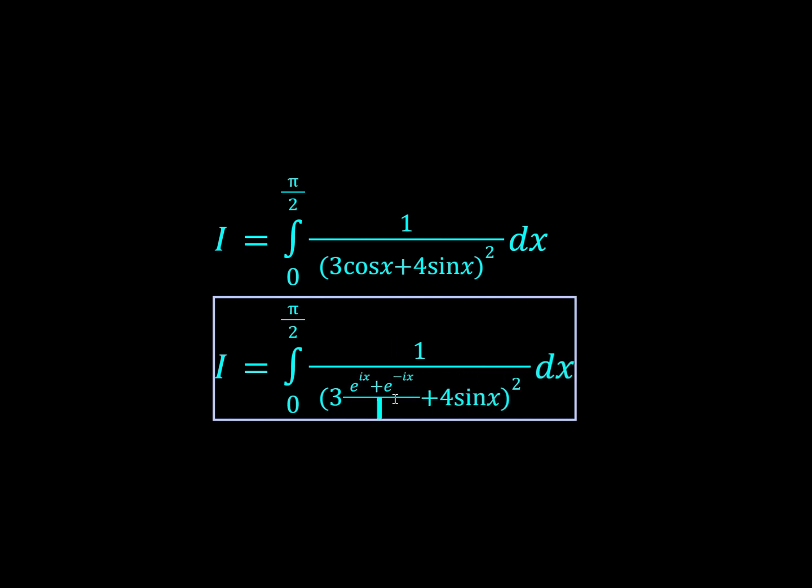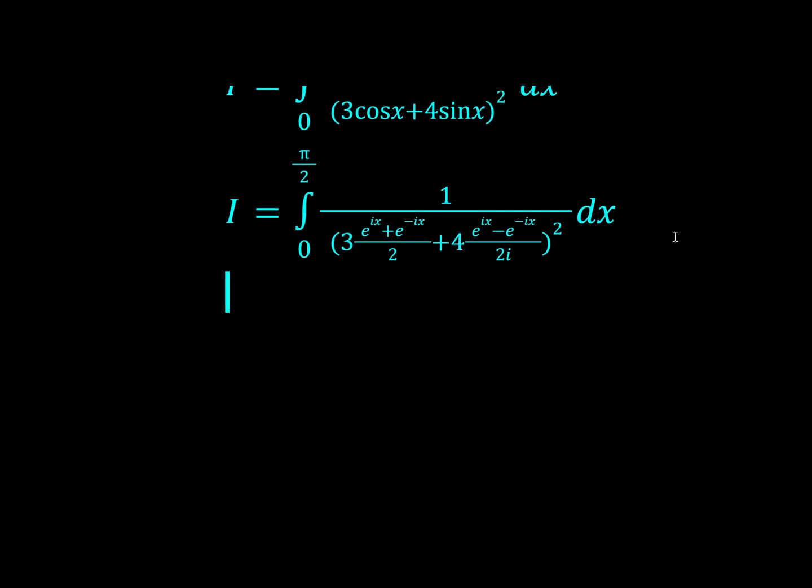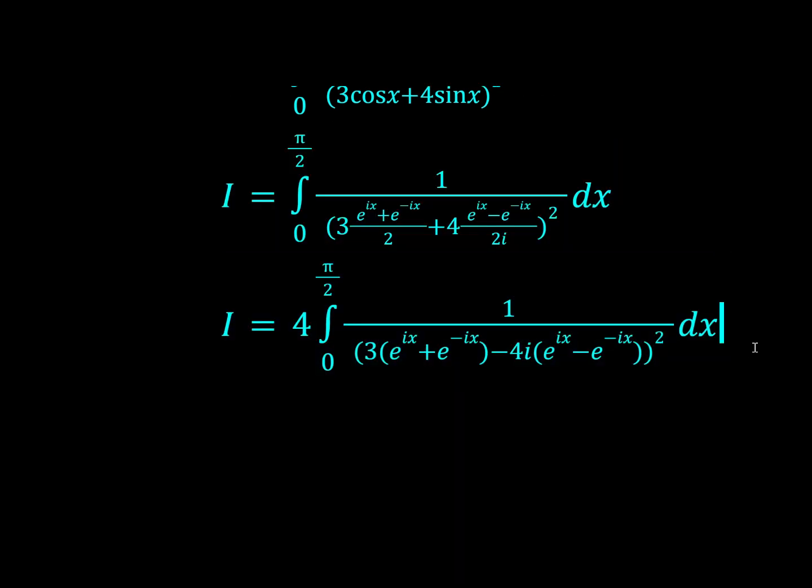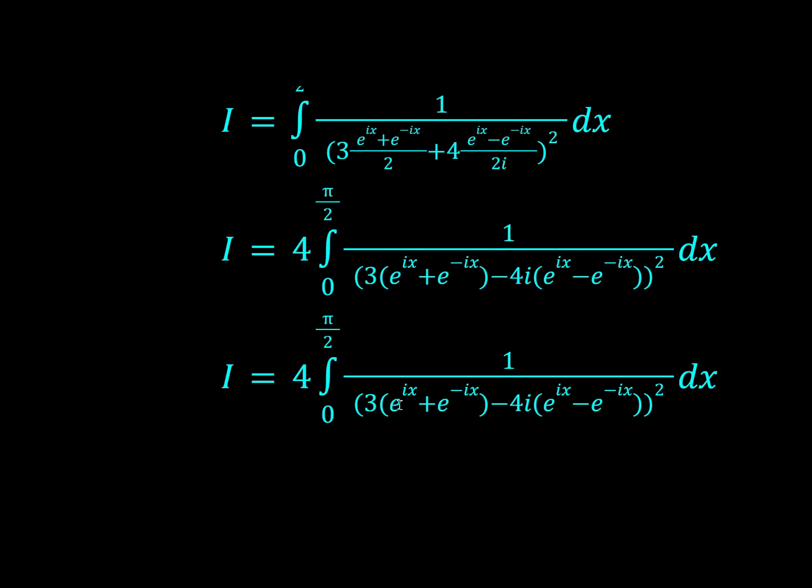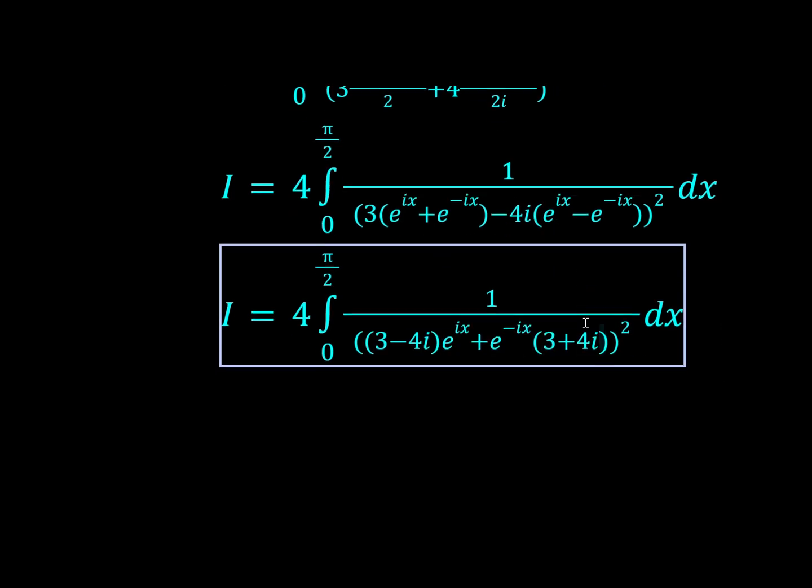So we can write cos x in this way and sin x in this way. These are just the complex definitions of sine and cosine, which come from Euler's formula. If we just expand this all out and collect like terms, we're going to get (3 - 4i)e^ix + e^(-ix) times (3 + 4i).